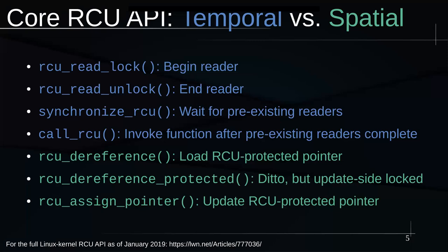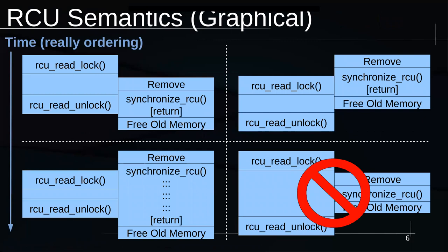Moving on to RCU semantics graphically: we have rcu_read_lock and rcu_read_unlock delimiting a reader. In the upper left-hand corner, we have a synchronize_rcu that started after a reader did, meaning that reader might see the data that was removed — it might have a reference to that data. That means synchronize_rcu has to refrain from returning until that reader gets done, at which point you can free the old memory without worrying about messing up the reader.